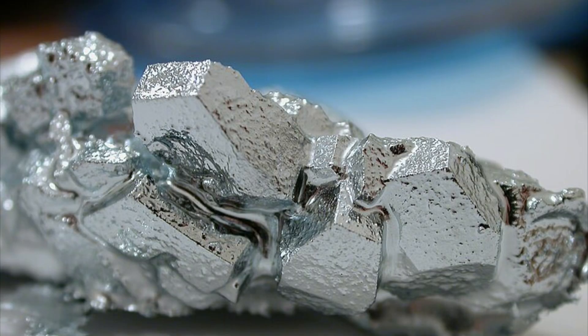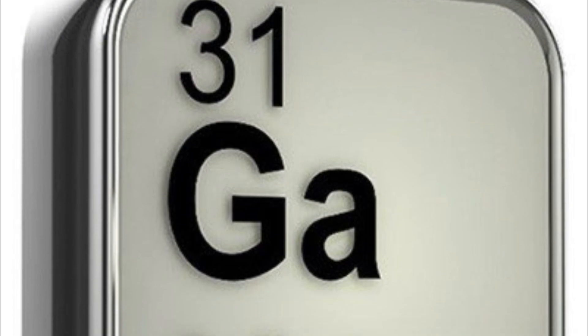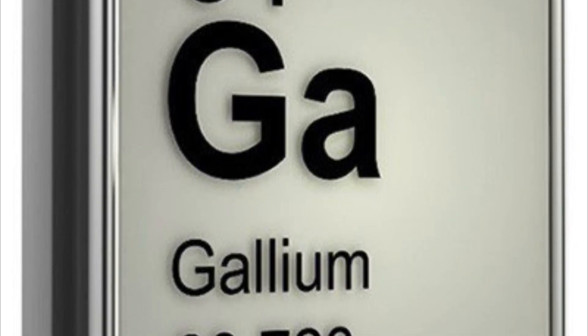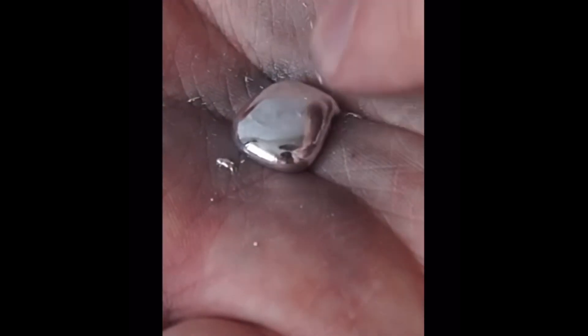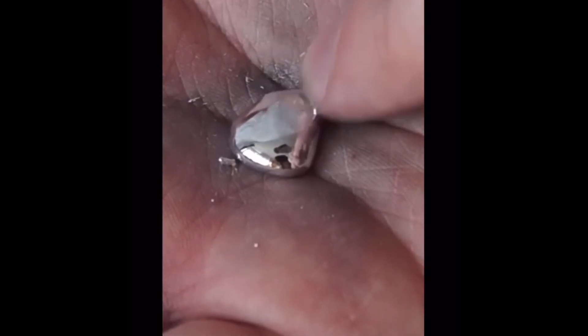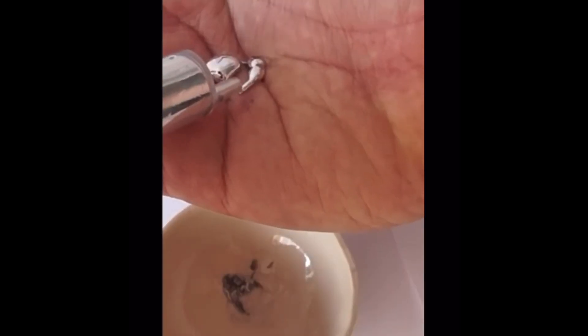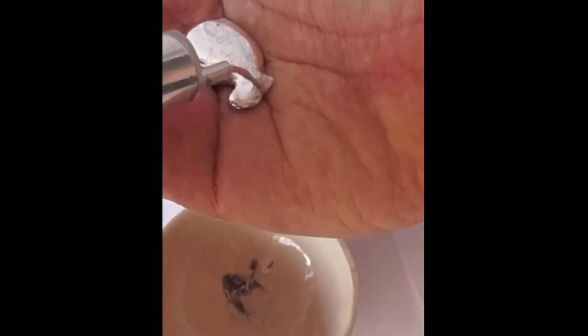This is gallium, the metal that looks solid but melts with just a touch. Let's dive into why it's so fascinating. Gallium melts at just under 30 degrees Celsius, which means it turns from solid to liquid in the palm of your hand. It's like magic, but it's pure science.